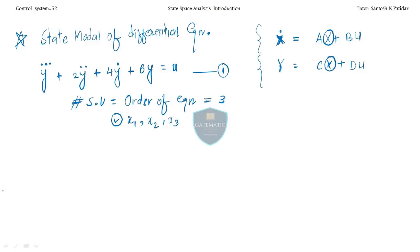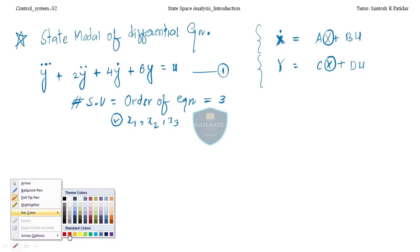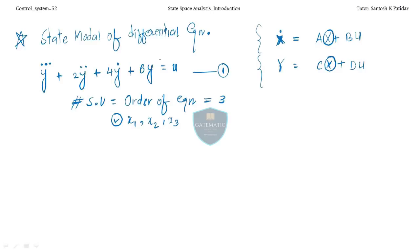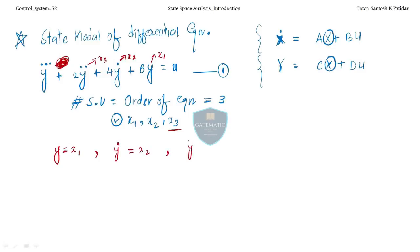Watch carefully. The first y, you will take as x1. Next, y-dot you will give x2, and y-double-dot you will give x3. You can't go to x4 because the maximum is x3. So simply: y equals x1, y-dot equals x2, y-double-dot equals x3. This is the easiest method.